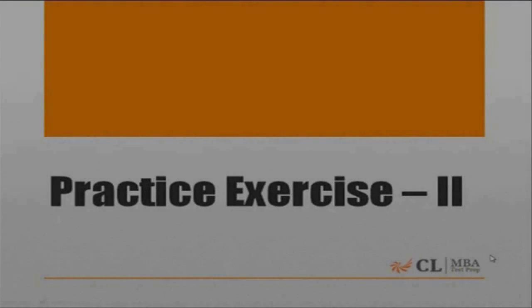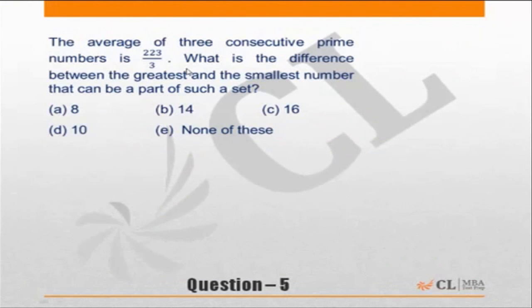Okay, let's do practice exercise 2, question 5. The average of three consecutive prime numbers is 223 by 3. What is the difference between the greatest and the smallest number that can be part of such a set?